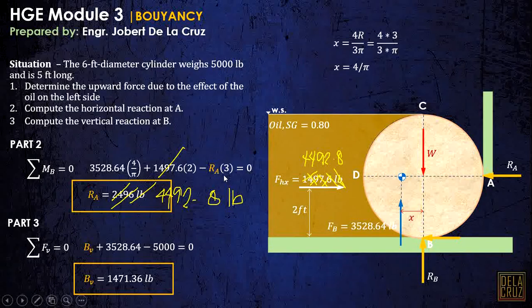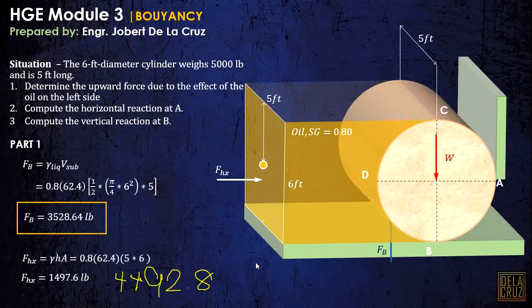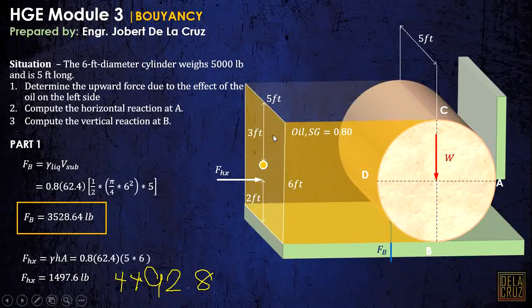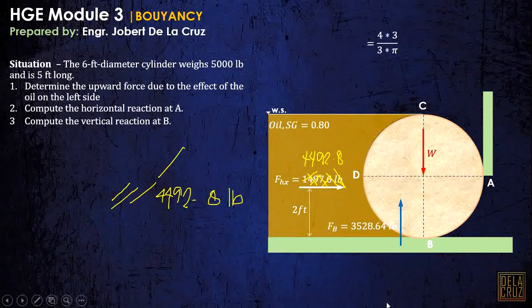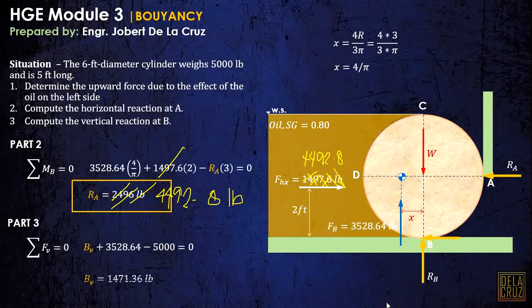Please take note of the earlier error where the barred H was not included in the hydrostatic force calculation. The correct hydrostatic force is: FHX = 0.8 × 62.4 × barred H × Area, where barred H should have the factor of 3 included. That concludes the problem.